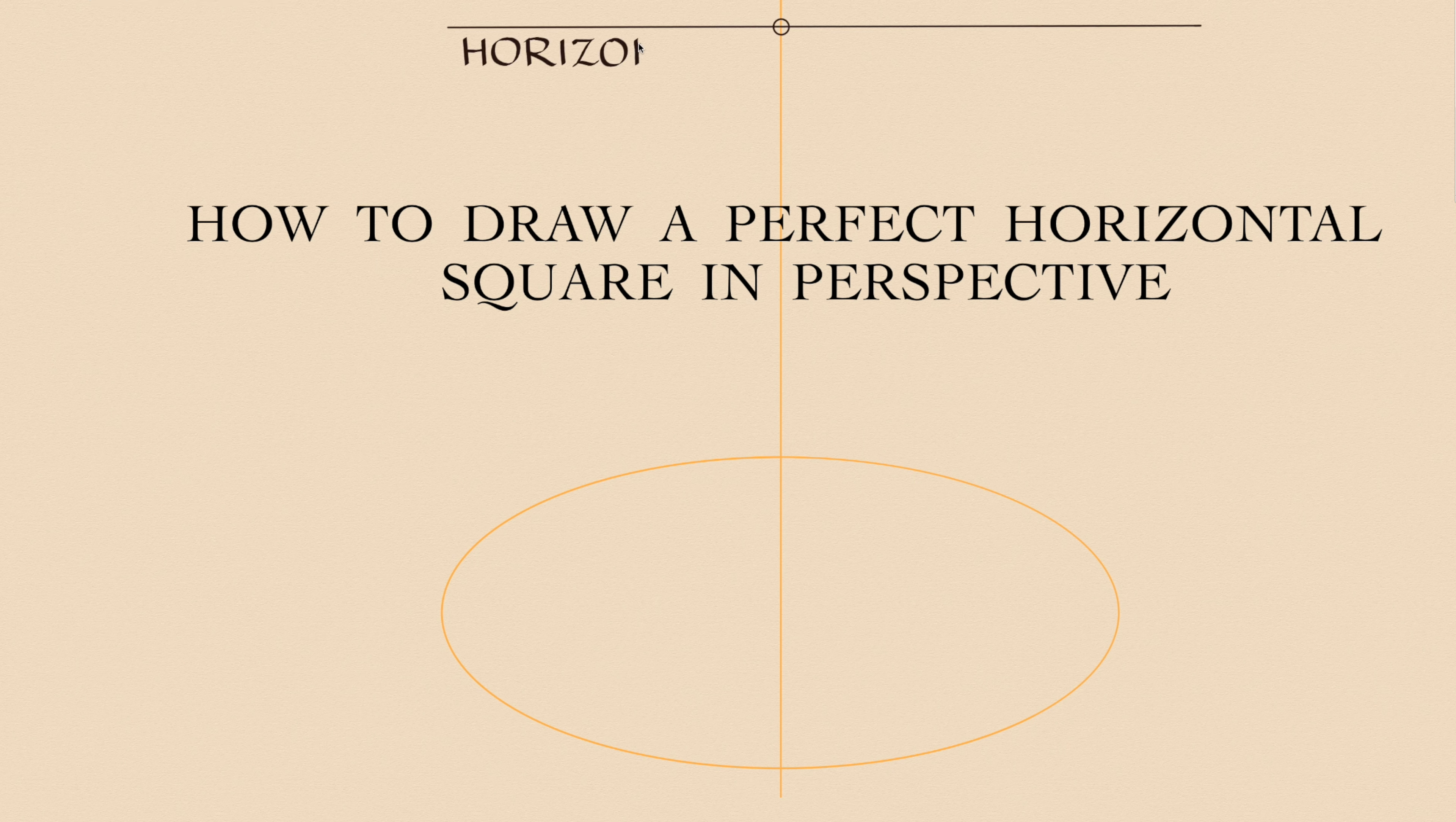At the top there is the horizon. The axis crosses it on the vanishing point.